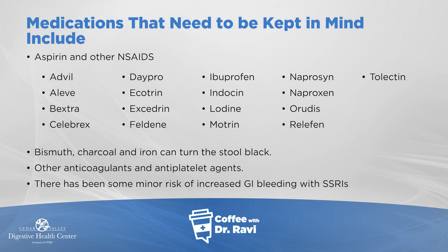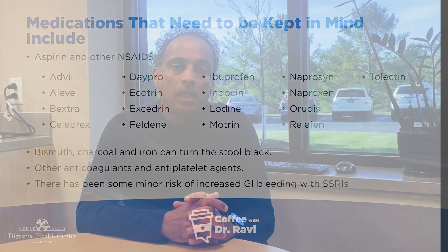Medications that can cause bleeding include aspirin, ibuprofen, naproxen, Aleve, and similar drugs. I generally try to discourage patients from using those if possible and recommend something like Tylenol as a first line. Pepto-Bismol, iron, and similar things can color the stool darker but don't make it truly black. There has also been a slight increase in risk of GI bleeding with certain antidepressants, commonly called SSRIs, through a number of different mechanisms.